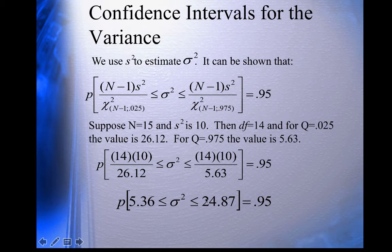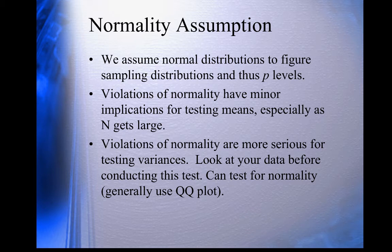We assume normal distributions to derive sampling distributions and therefore p-values. Violations of normality don't usually worry us for means because the central limit theorem ensures the sampling distribution of the mean becomes normal as n grows. However, violations of normality are more serious for testing variances — especially with a small sample, you could be off. So if you're going to use a chi-square test, look at your data and check normality, for example with a Q-Q plot.